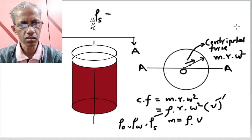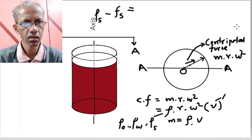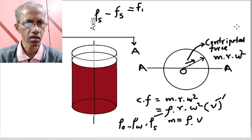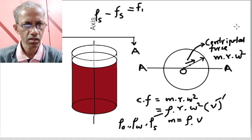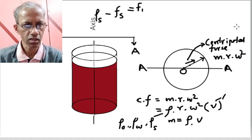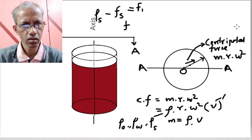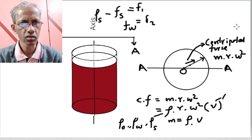Let's write it in descending order. The centrifugal force for the sludge is the highest, written as F1. Next, the density of water is less than that of the solids but higher than that of the oil, so the centrifugal force for water, F2, is less than F1.